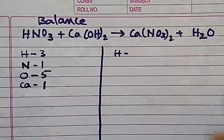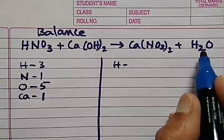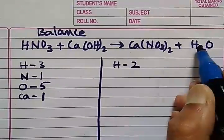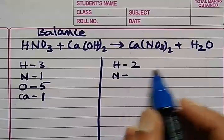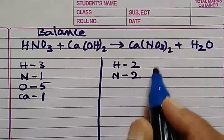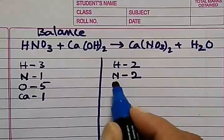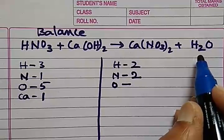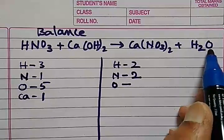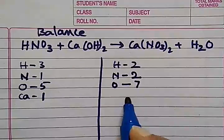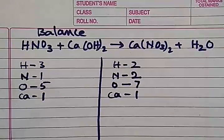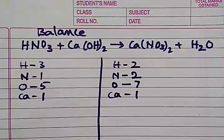Hydrogen only two, nitrogen here two, oxygen six plus one seven, and calcium one. So it is not equal except calcium. All other things have differences.